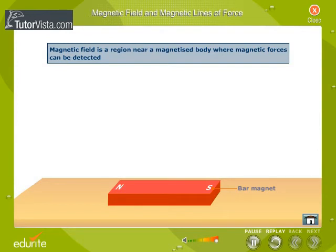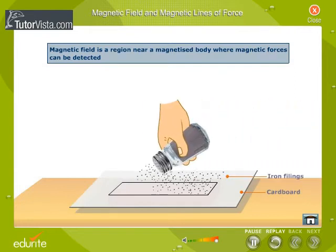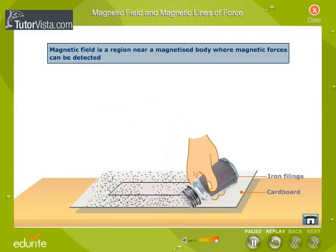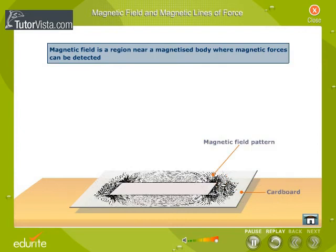Let us understand the concept of magnetic field with the help of an activity. Place a cardboard over a magnet. Sprinkle some iron filings on the cardboard. Tap the cardboard gently. We observe that the iron filings align themselves in definite patterns. These patterns indicate the magnetic field of the magnet.